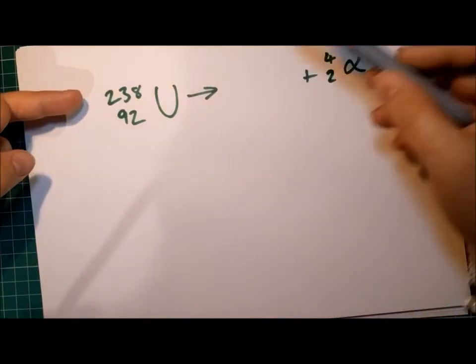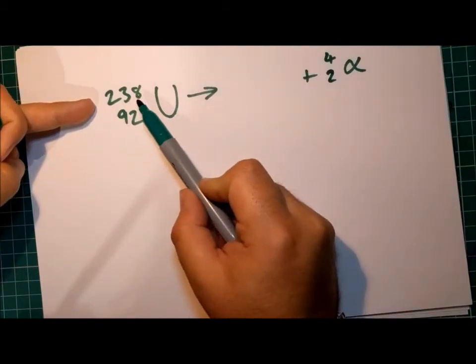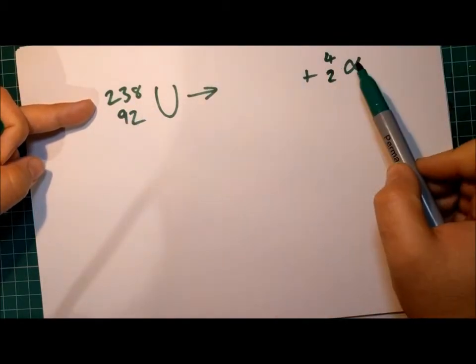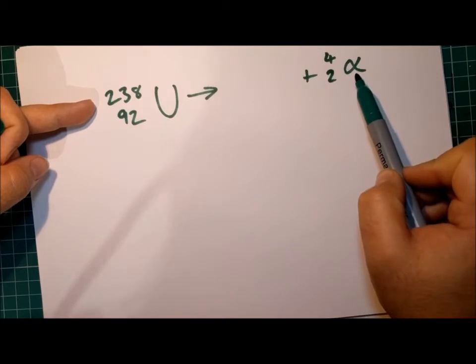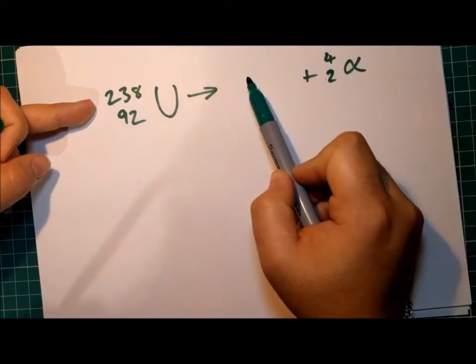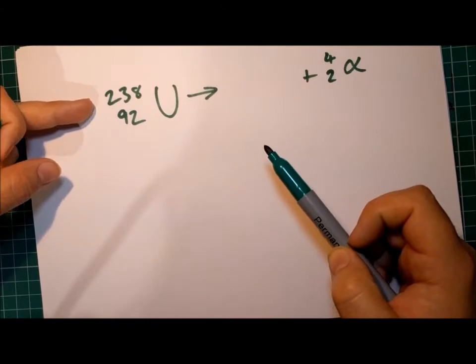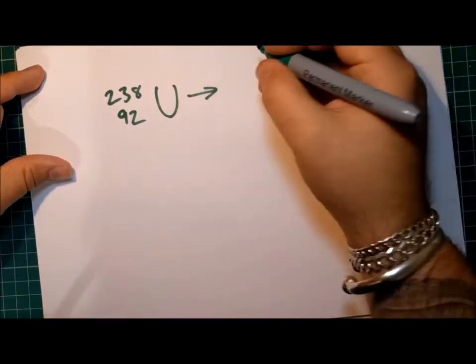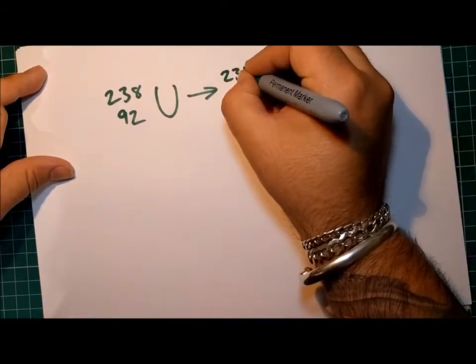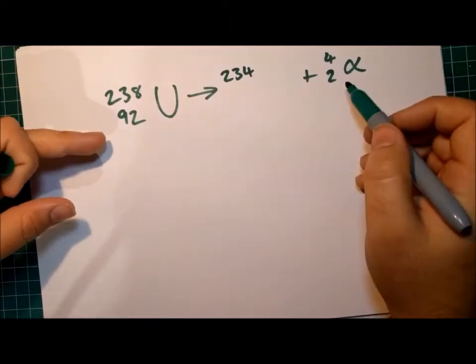Now, if we look before and after, before we had a mass of 238. And afterward, we have a mass of four in the alpha particle and something else. So what plus four makes 238? 234.